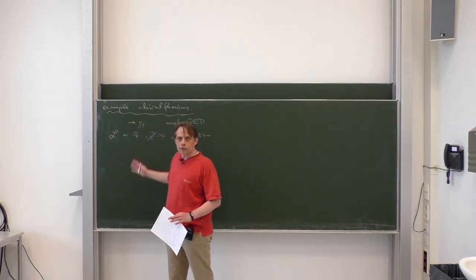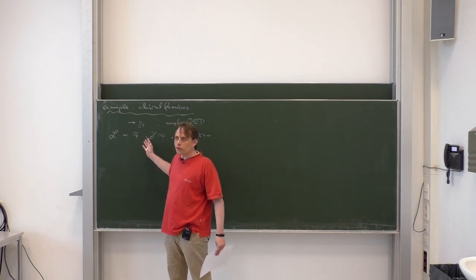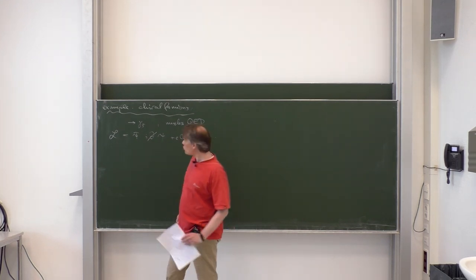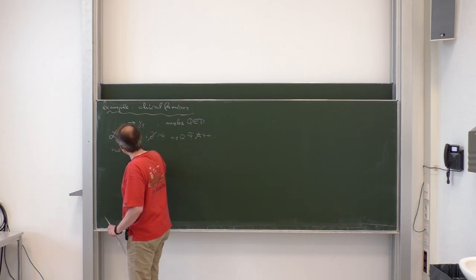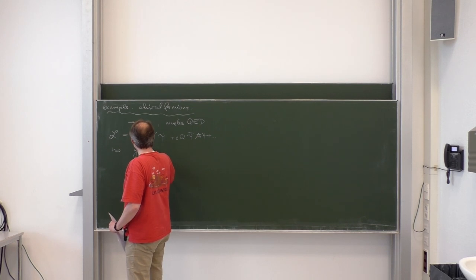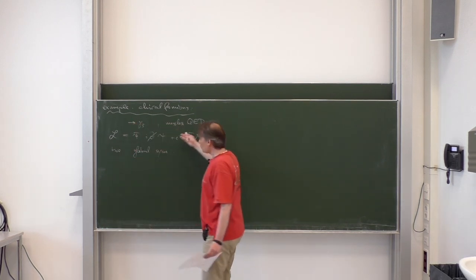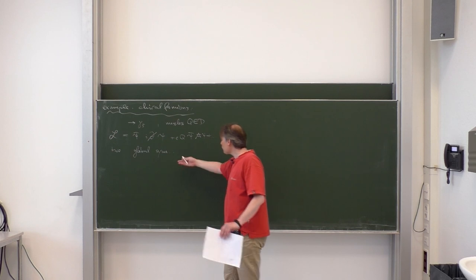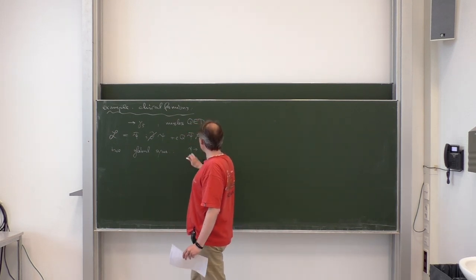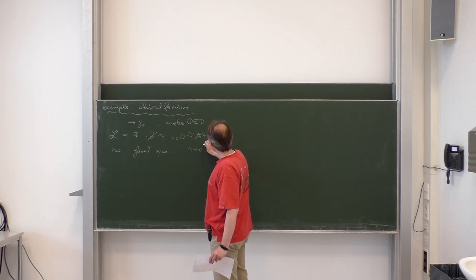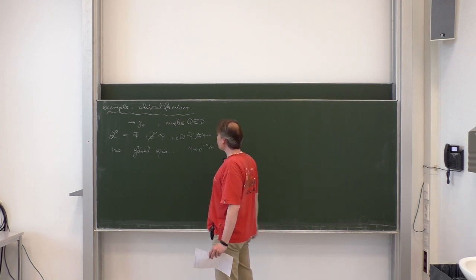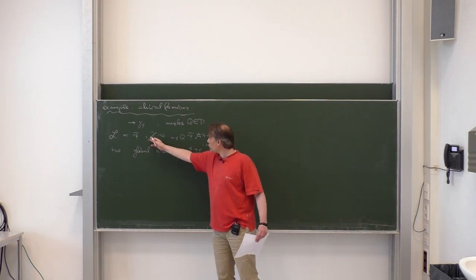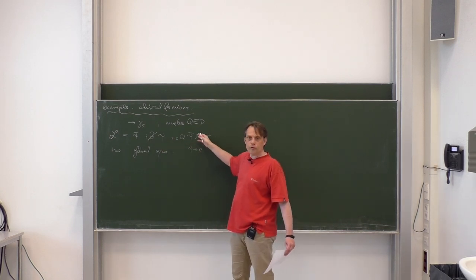This Lagrangian has two symmetries. It is not only gauge invariant under the usual local gauge transformations corresponding to QED, but it has an additional symmetry. One of them is the ordinary QED gauge transformation, which you can do in local form even, but of course also globally. You would do a phase transformation of the spinor: ψ → e^{iα} ψ. That leaves the Lagrangian invariant. If α is x-independent, the derivative doesn't act and you do not need any transformation of the photon field.